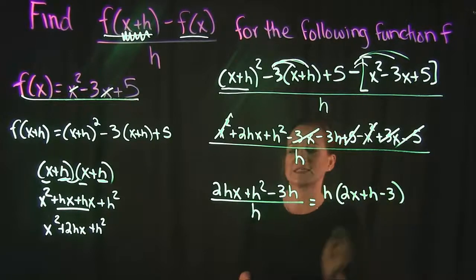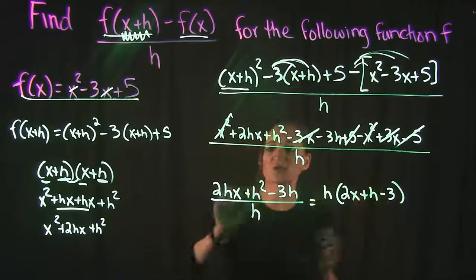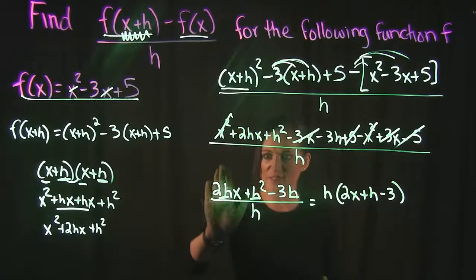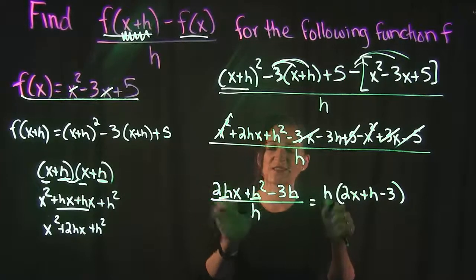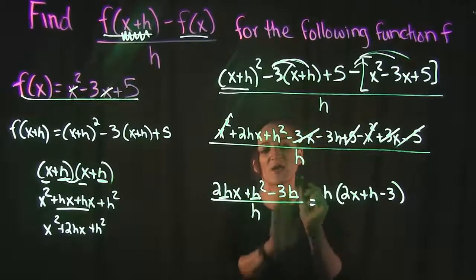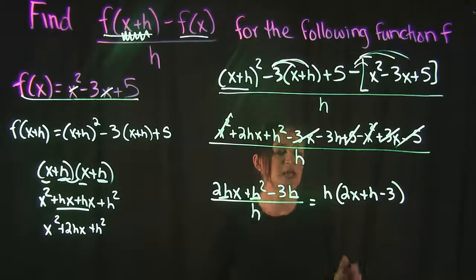So if I get rid of an h from everything in the numerator, that's going to look like 2x plus h minus 3. So again, all I did was pull out an h from each one of these. If I take out this h, I'm left with 2x. If I take out one of these h's, I'm still left with 1. And if I get rid of this h here, all I'm left with is negative 3.